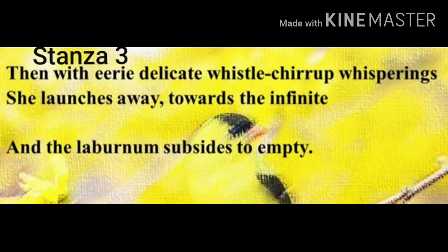Then with eerie delicate whistle chirrup whisperings, she launches away towards the infinite, and the laburnum subsides to empty. After reaching the end of the branch, the bird makes eerie delicate whistle chirrup whisperings — eerie means very weird and strange — so she makes a sweet chirping sound just like whispering. After that she flies away towards the infinite, meaning the sky. And it again makes the laburnum tree silent and dull as before. After the departure of the goldfinch bird, the laburnum tree again becomes silent, dull and lifeless.